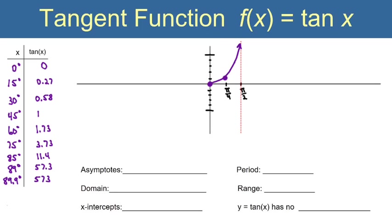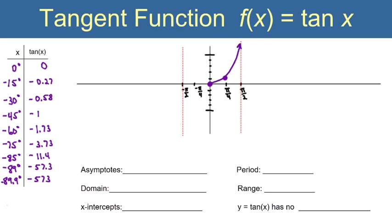Now we need the other half of the curve. If we change all those angles to negative, they're now quadrant 4 angles, so all the tangent values become negative. Every y-value that was positive becomes negative as we go down the left side. We put an asymptote at −π/2, a mark at −1 for −π/4, and −3.73. That side goes down the same way the right side went up. This is called one branch, or one period, of the tangent function, and the first branch goes through the origin.